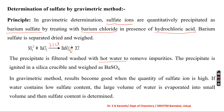In the gravimetric method, results become good when the quantity of sulphate ion is high, but water usually contains very low sulphate content. To make the concentration sufficiently high, we have to take a large volume of water and evaporate it to a small volume, then determine the sulphate content.